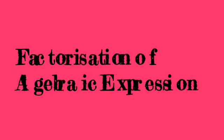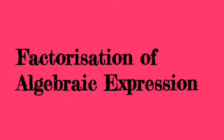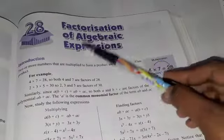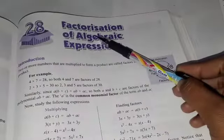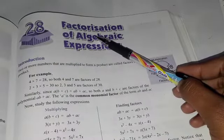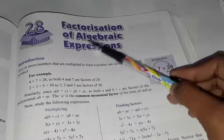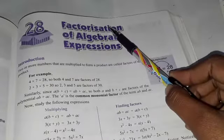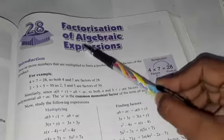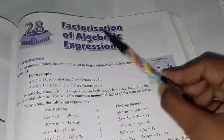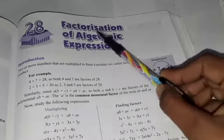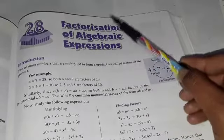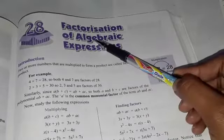Today's new topic is factorization of algebraic expressions. A combination of numeric value and variable is known as an algebraic expression. So how do we do the factorization of those algebraic expressions? Before that, you have to understand what factorization means. This word factorization comes from the word factor.